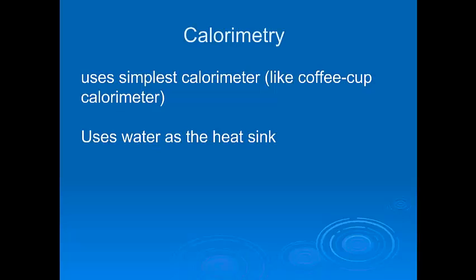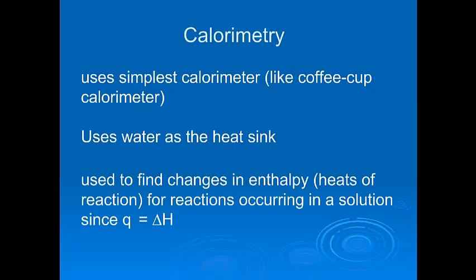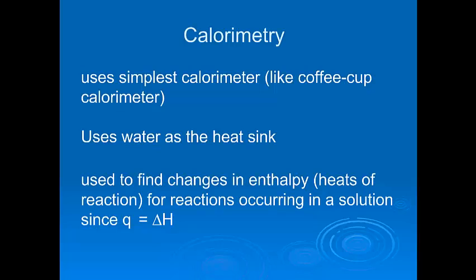We can use calorimetry to find changes in enthalpy — delta H. Since Q and delta H are the same, we have the equation already for calculating Q and delta H. We just have to be very conscious of the sign of delta H.